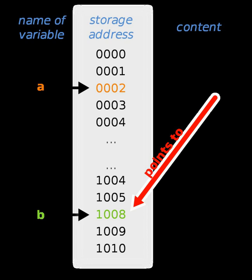In some programs, the required memory depends on what the user may enter. In such cases the programmer needs to allocate memory dynamically. This is done by allocating memory at the heap rather than on the stack, where variables usually are stored. Dynamic memory allocation can only be made through pointers, and names like with common variables can't be given. Pointers are used to store and manage the addresses of dynamically allocated blocks of memory. Such blocks are used to store data objects or arrays of objects.